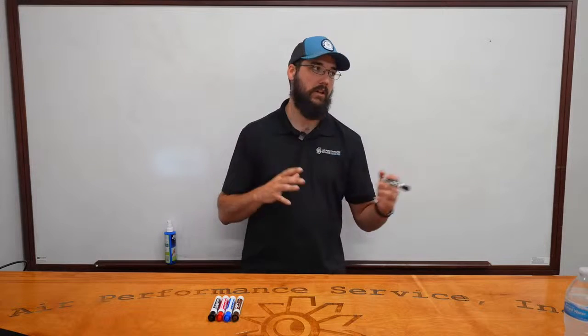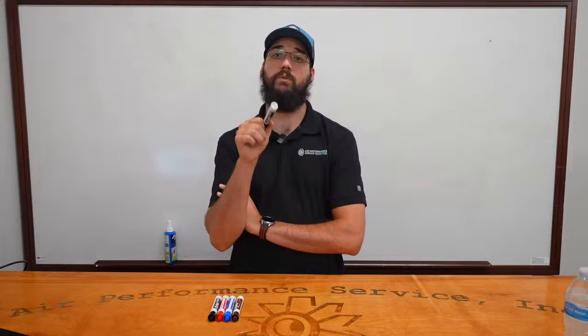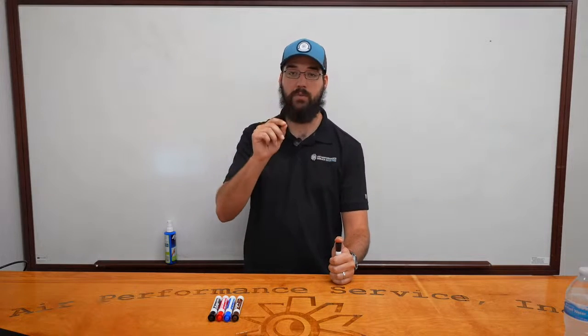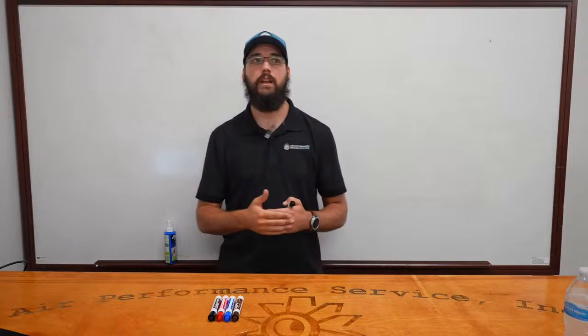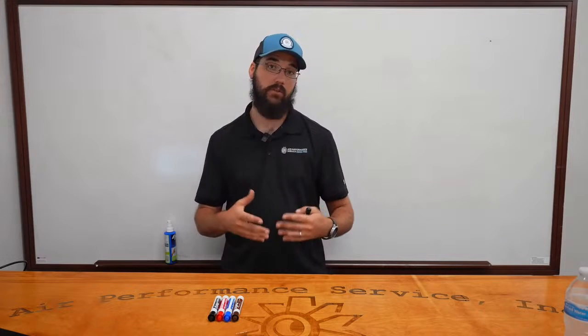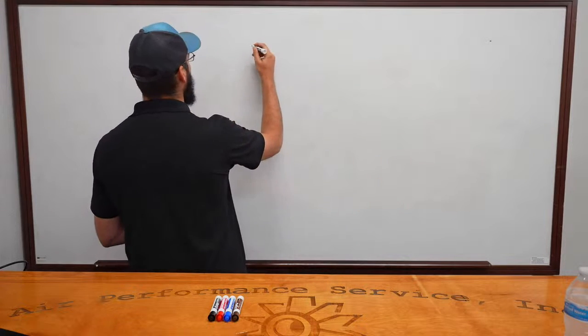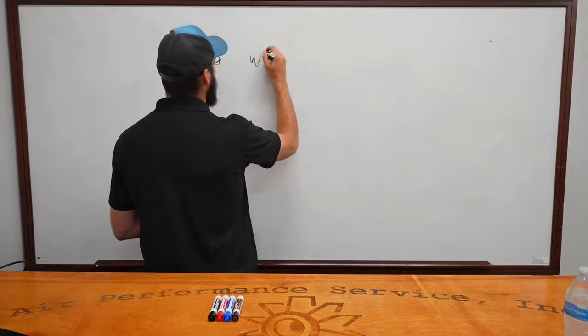Last time I got hung up on startup, commissioning, and approach values. I want to reiterate because it is very critical to understand when troubleshooting a cooling tower: the approach value is critical. Most of the time with the tower we're dealing with a mechanical or electrical issue, but when you run into a system with an actual control issue, it could be because of the approach value — so you need to monitor your wet bulb.